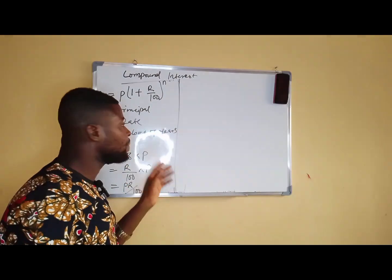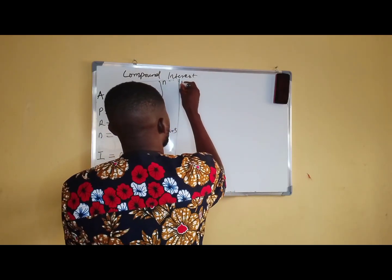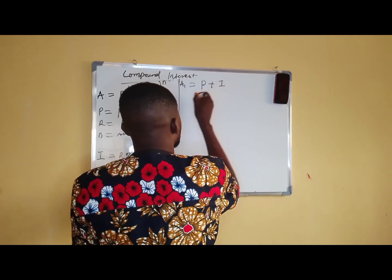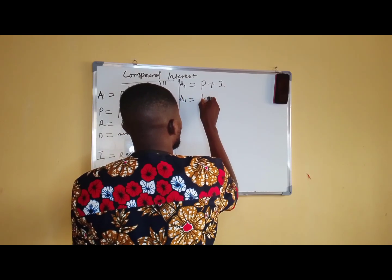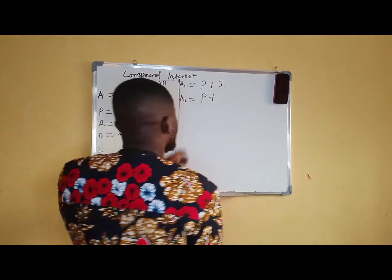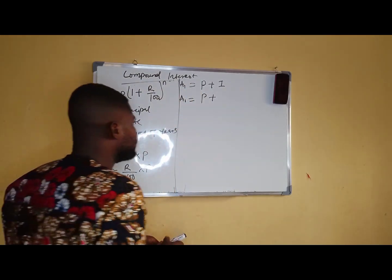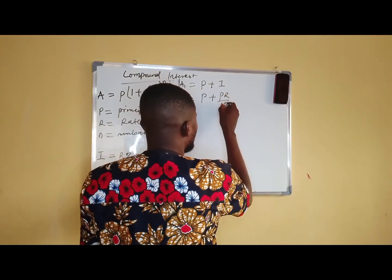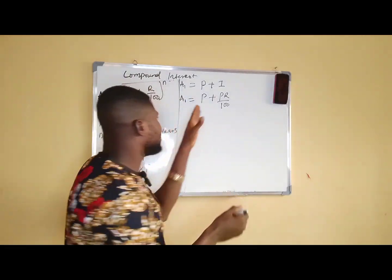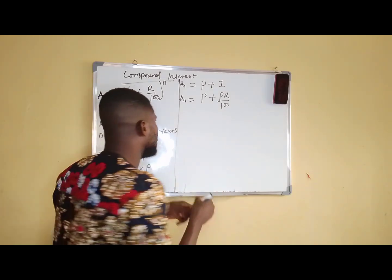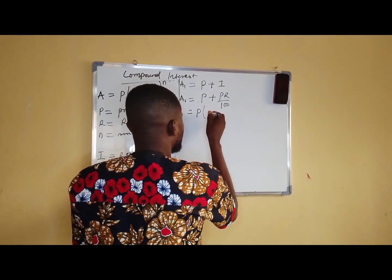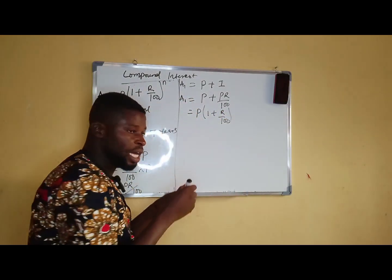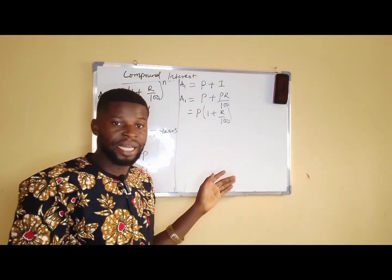Now, the amount for the first year will be A1, which is equal to P plus I. A1 would be equal to P plus the value of I, which is interest, equal to PR all over 100. We substitute the value and that is PR all over 100. From here, we factor out P from both of them and that is equal to P in bracket 1 plus R all over 100.